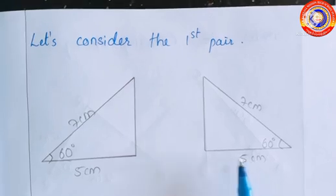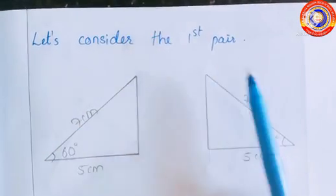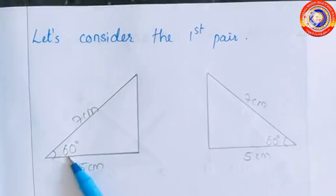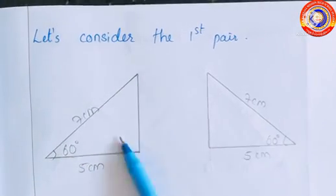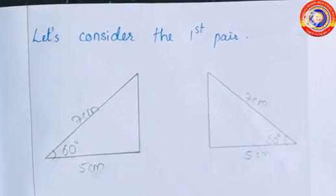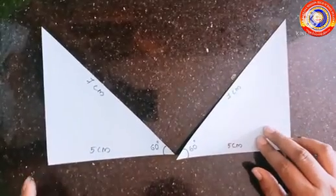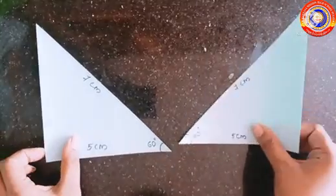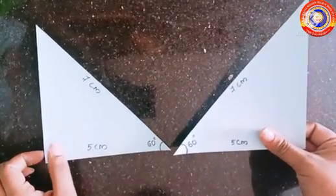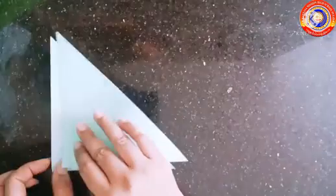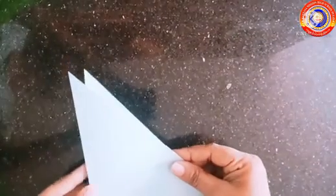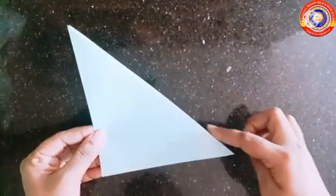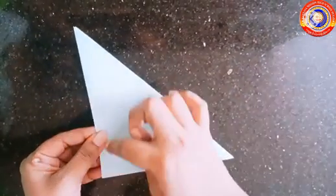In both the triangles, the base is five centimeter and the hypotenuse is seven centimeter, and the angle between these two sides is 60 degrees. Let's cut these triangles in a thick paper and we can make them coincide with the other triangle by turning or flipping.